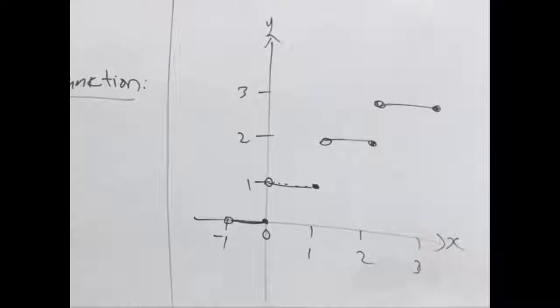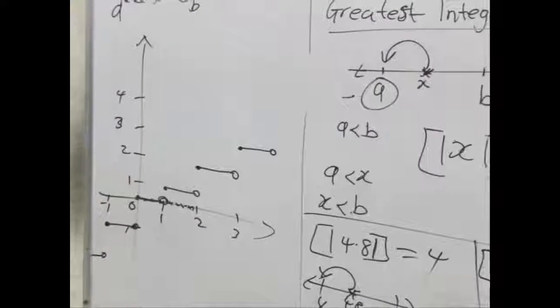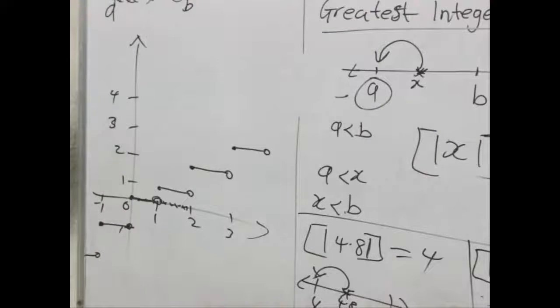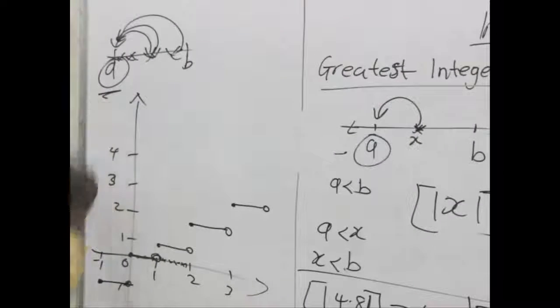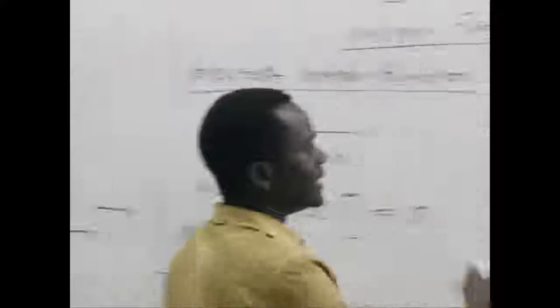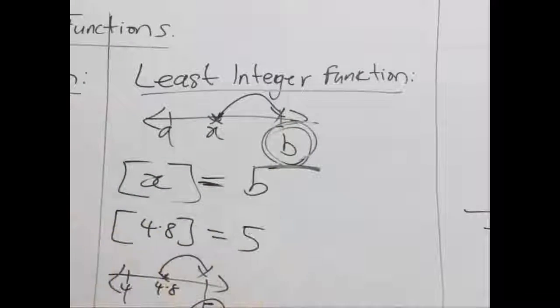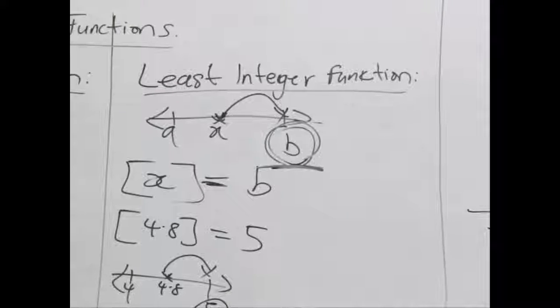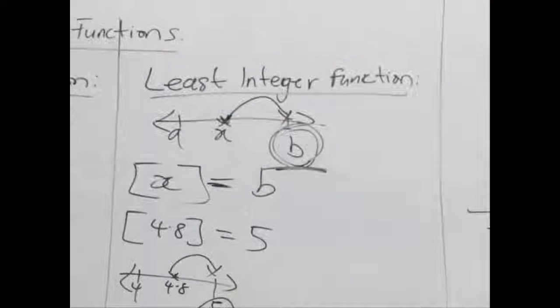So, you can see that the only difference between the graph of greatest and least integer function is the end point. We can find out that for greatest integer function, the end point is always the lower number in which our value finds itself in. But when we take the least integer function, the end point is always the greater number in which our function finds itself in. So, I hope this will be helpful.